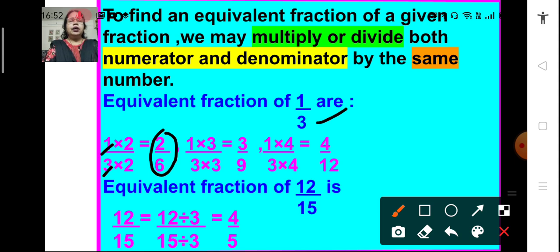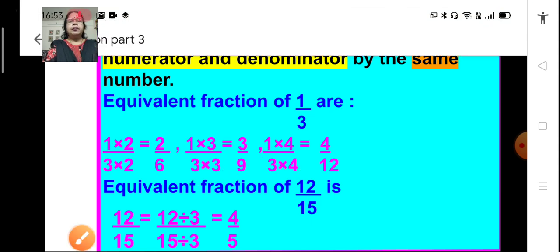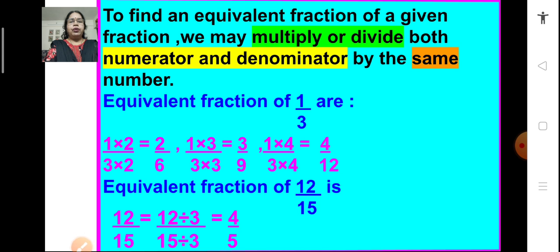Here we have multiplied both the numerator and denominator by 3 and we get 3 upon 9. So, 3 upon 9 is another equivalent fraction of 1 upon 3. Similarly, if we multiply both the numerator and denominator by 4, we get 4 upon 12, which is another equivalent fraction of 1 upon 3. So, this way, by multiplying both the numerator and denominator by the same number, we can get the equivalent fraction of the given fraction.